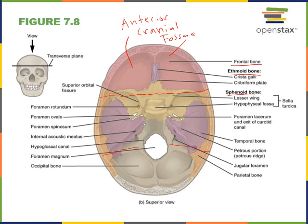The middle cranial fossa is formed from the temporal bone and the sphenoid bone, with a little bit of the parietal bone. The posterior portion of the cranium is formed mostly by the occipital bone, with a little bit of the temporal bone, forming the posterior cranial fossa.